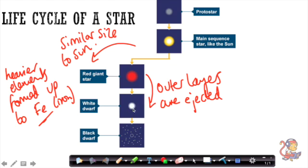You end up with this white dwarf in the middle, and eventually this hot white dwarf will cool down and turn into a black dwarf.